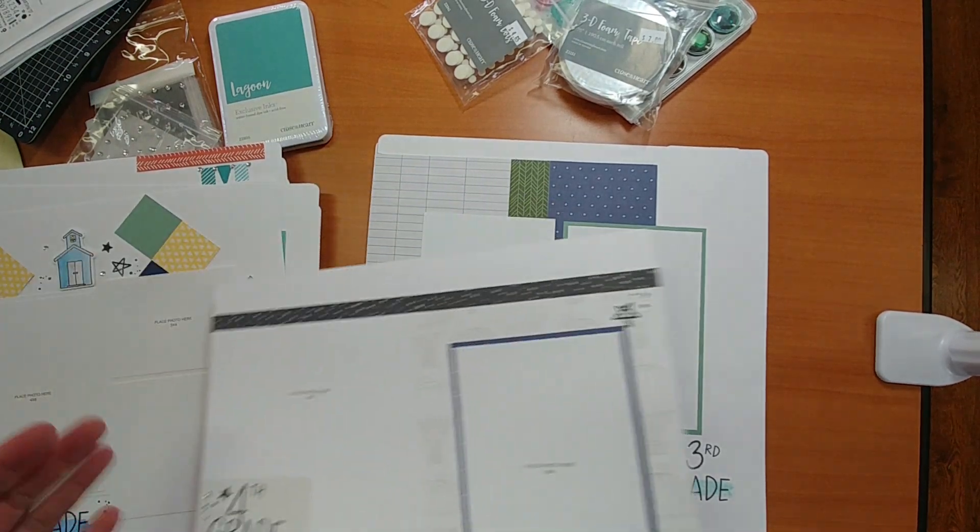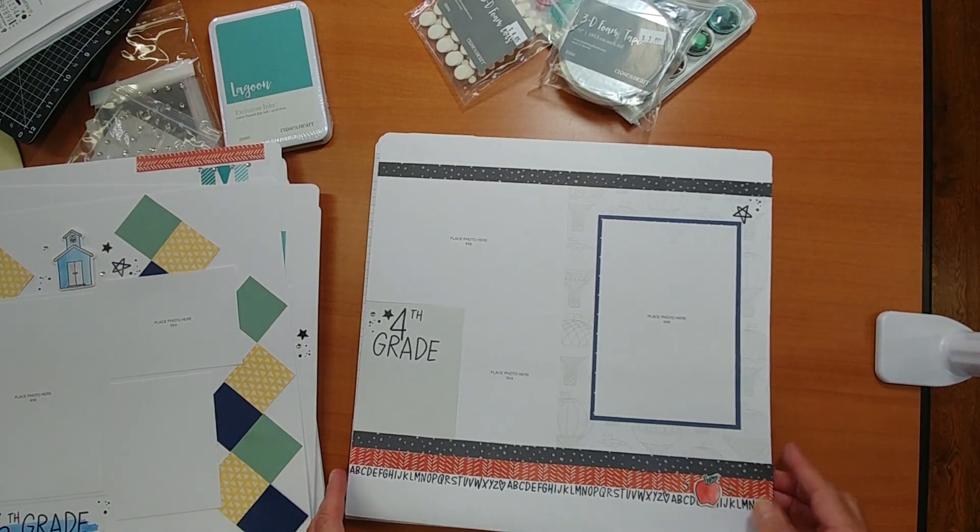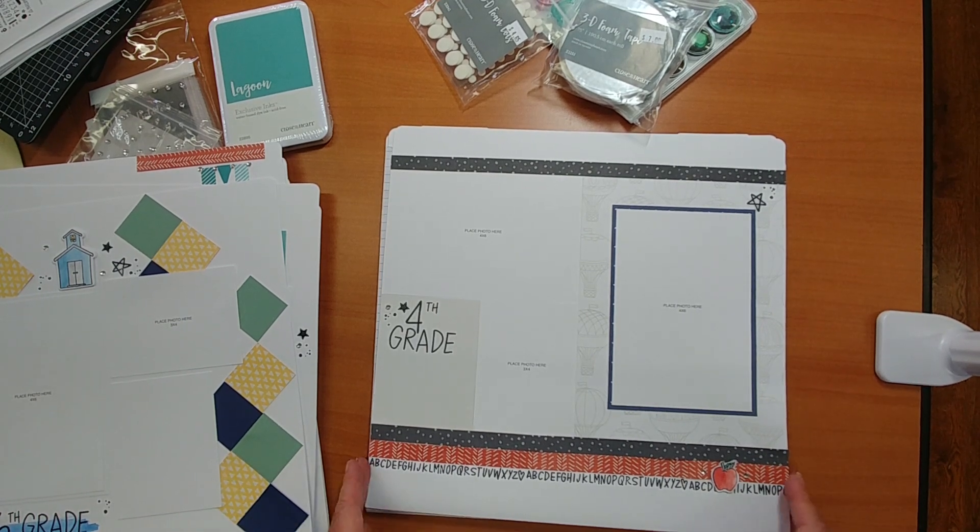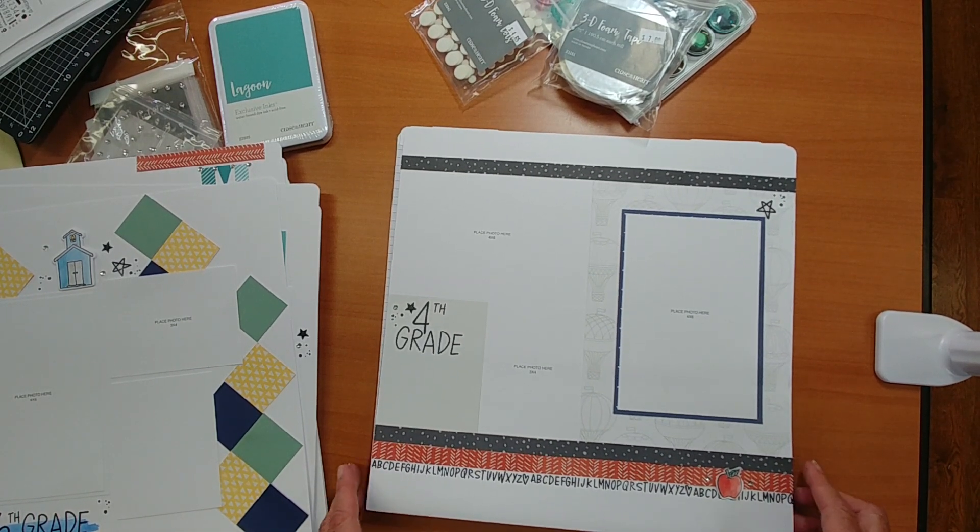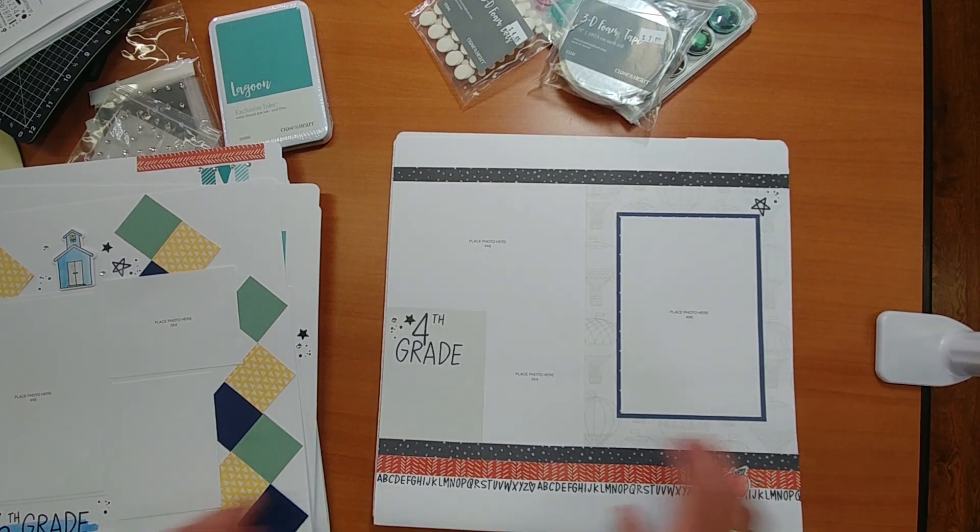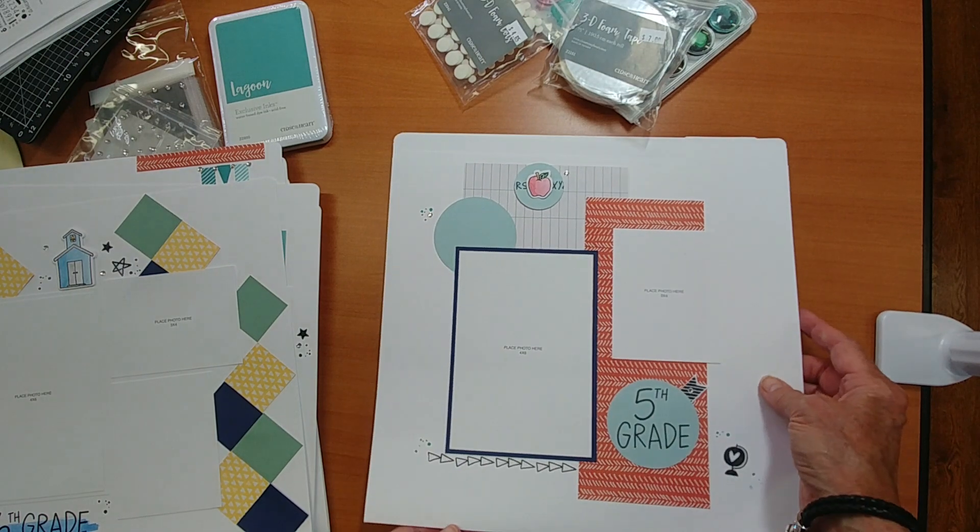You have an option of if you want to use white cardstock, you can save the true fit folios for another project. I have another video showing you how else I've used the true fit folios. But some of these you will want to have the folder to collect all the memorabilia. So here's the fourth grade, fifth grade.